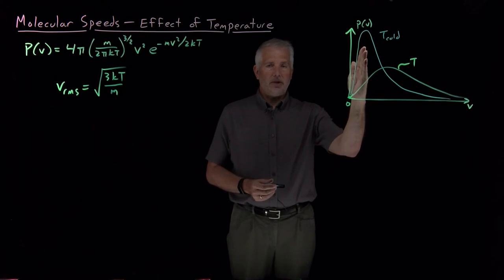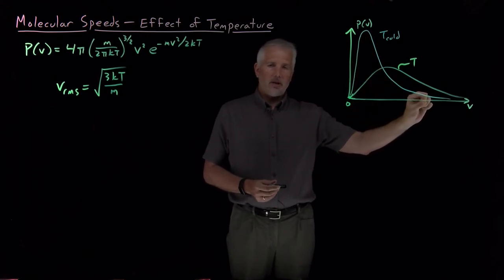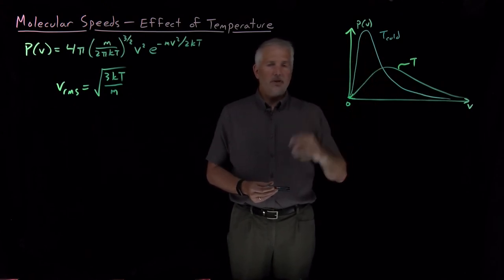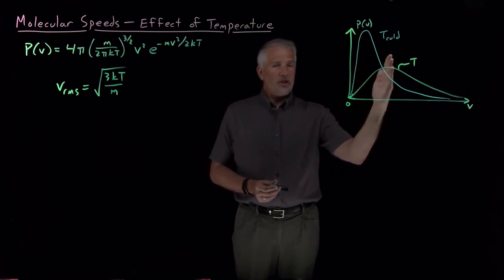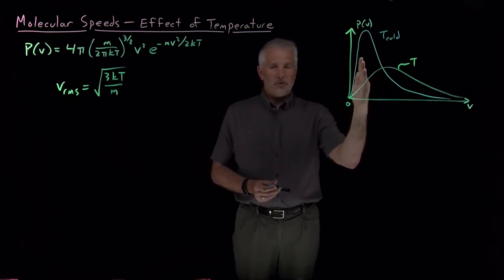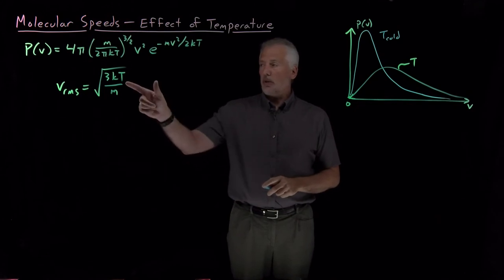It still has the same shape. It's still asymmetric. It's got a bigger tail on the large speed side than the small speed side. The peak in the distribution is shifted down to lower speeds, like we'd expect, because I lowered the temperature.